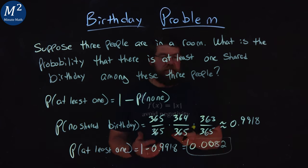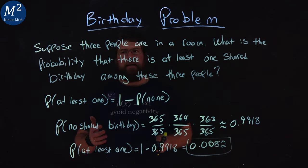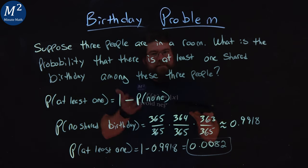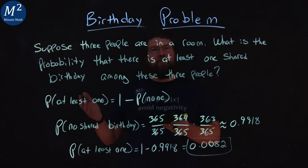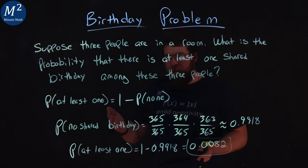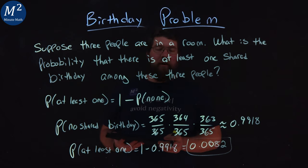And so there's a 0.0082 probability that if three people are in a room, at least one shares a birthday among those three people. I hope you learned something here about the birthday problem and probability. And as always, thanks for watching.